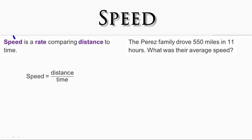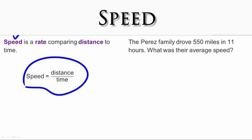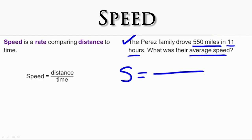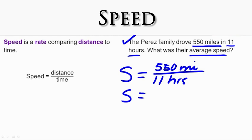Let's get started by reviewing speed. Speed is a rate comparing distance to time, and the speed formula is: speed equals distance over time. The Perez family drove 550 miles in 11 hours. What was their average speed? We're solving for speed — that's the unknown, S. Speed equals distance over time: 550 miles over 11 hours. We divide 550 by 11 and get 50 miles per hour, which is their average speed. This is how you use the speed formula to solve a problem.